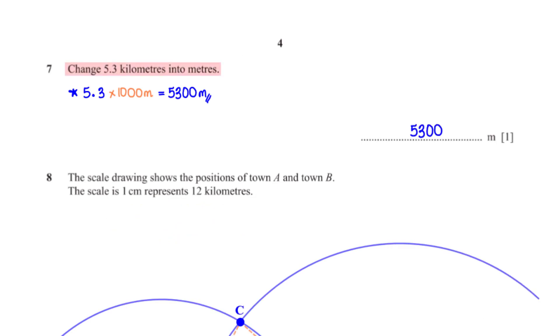Change 5.3 kilometers into meters. To change 5.3 kilometers to meters, we multiply 5.3 by 1000. This gives us 5,300 meters.